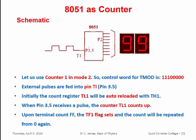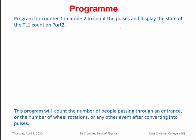In the port there are 8 pins. Let us connect this fifth pin, P3.5. This pin is actually connected to Timer 1. The output of port 2 is connected to the LED display with a suitable interfacing technique. Now let us see how this system can be operated using a program. Let us use Counter 1 in mode 2 to count the pulses and display the state of the count on port 2.